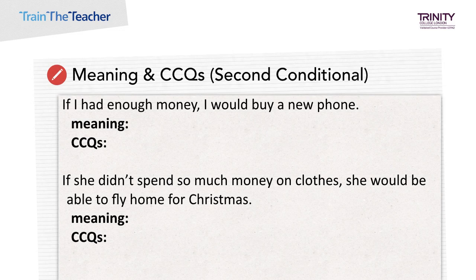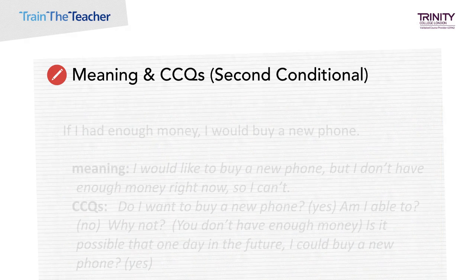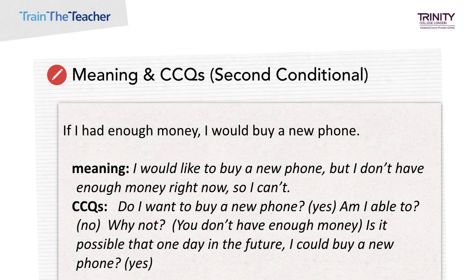Let's look at some CCQs we can formulate with second conditional sentences. With your partner or group, look at these two sentences and come up with their meanings and use these to form your CCQs. Pause the video and do this now. The meaning behind: If I had enough money, I would buy a new phone — is: I would like to buy a new phone, but I don't have enough money right now, so I can't. CCQs: Do I want to buy a new phone? Yes. Am I able to? No. Why not? You don't have enough money. Is it possible that one day in the future I could buy a new phone? Yes — it is not impossible, but it's not possible now and is probably not that likely in the near future. Hence the use of a past verb form to show a lower likelihood.